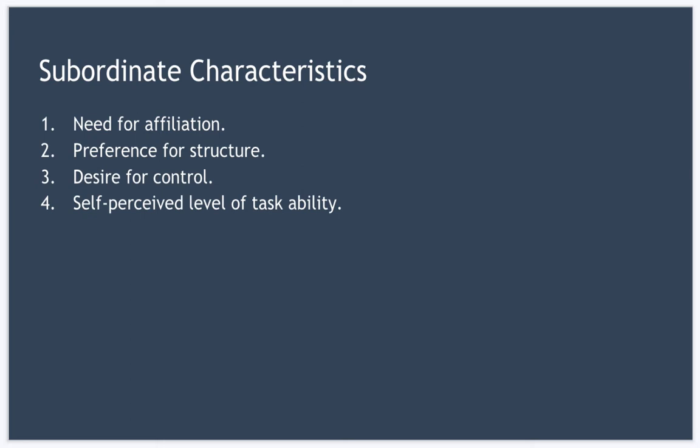Now conversely, achievement-oriented leadership may work better where subordinates have a low need for affiliation. Next we have preference for structure. Now this describes a subordinate's preference for structure and rigidity in their working practices and relationships. Now subordinates who prefer more structure will obviously be more suited towards directive leadership.